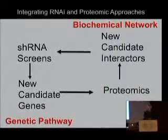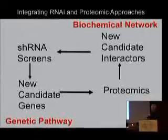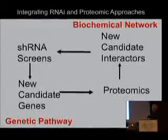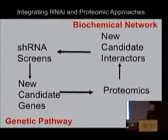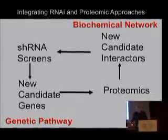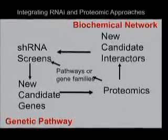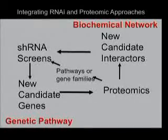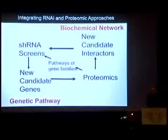What we've been working on is a way to merge genetic analysis through RNAi with proteomics, so that we can identify candidate-interacting proteins, develop biochemical networks, and then feed new candidate-interacting proteins back into an RNAi-type approach. One can use this not only to look for genes that emerge from screens, but also to look at pathways and gene families — employing proteomics first, identifying new components, and then carrying out RNAi screens based on that.